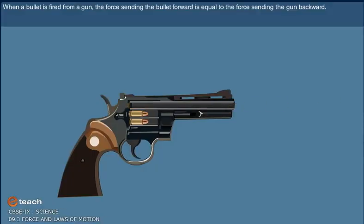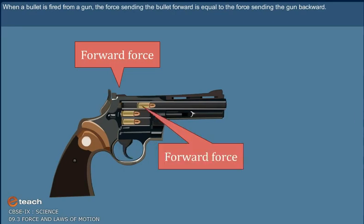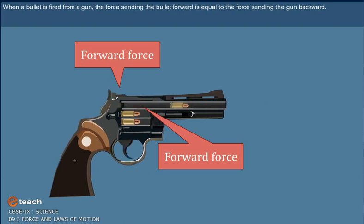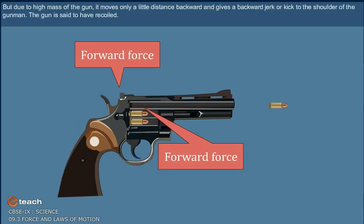When a bullet is fired from a gun, the force sending the bullet forward is equal to the force sending the gun backward. But due to the high mass of the gun, it moves only a little distance backward and gives a backward jerk or kick to the shoulder of the gunman. The gun is said to have recoiled.